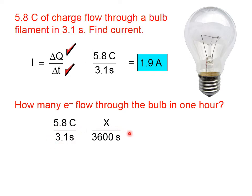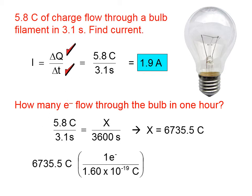An hour is 3,600 seconds. So if we cross multiply and solve that for x, we get 6,735.5 coulombs of charge flow through the bulb every hour. And since an electron has a known quantity of charge associated with it, namely 1.60 times 10 to the negative 19th coulombs, we can figure out how many electrons flow through that bulb filament in one hour.